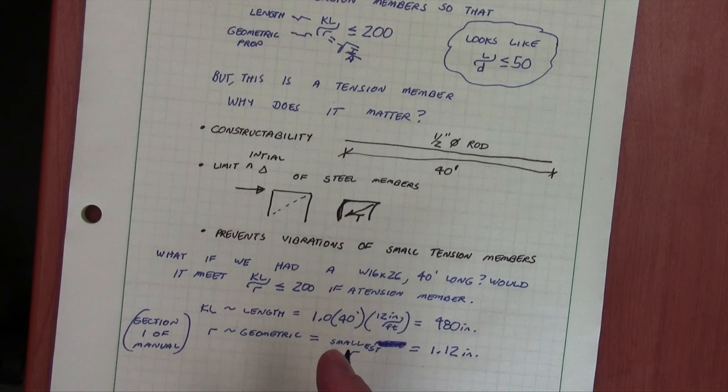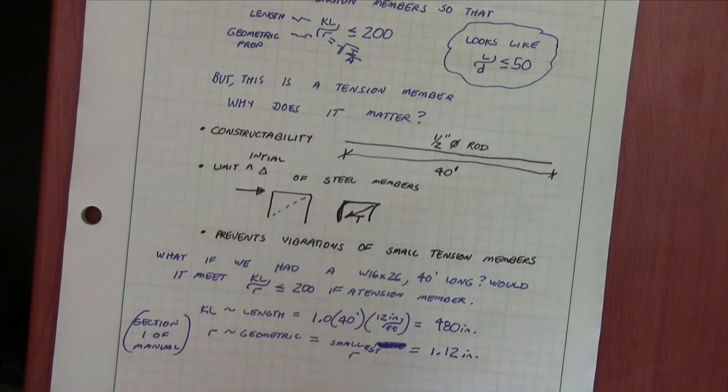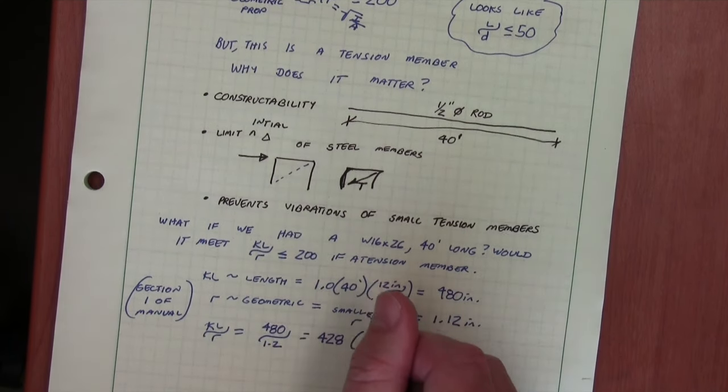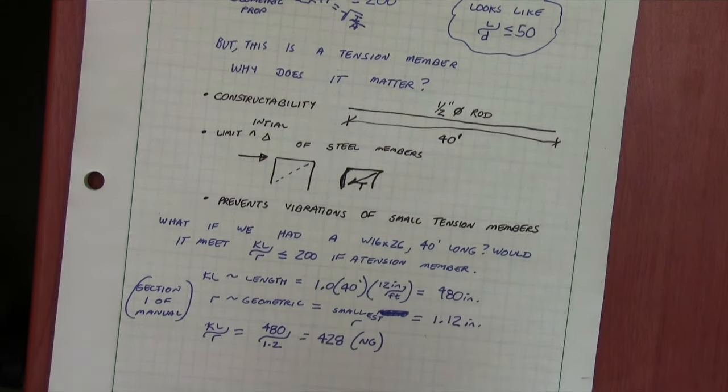R is a geometric property found in section one of the manual of 1.12 inches. And if we do this math for KL over R, then we find that we have 480 over 1.2. And this is 428, which is much greater than 200. And so it's no good.